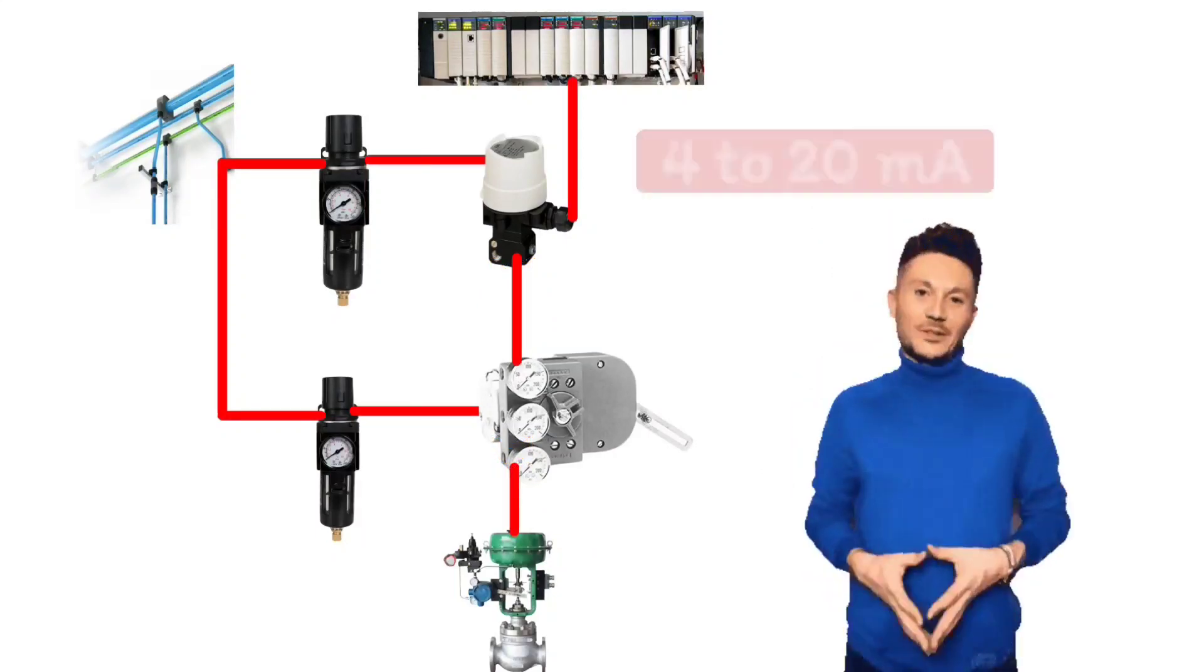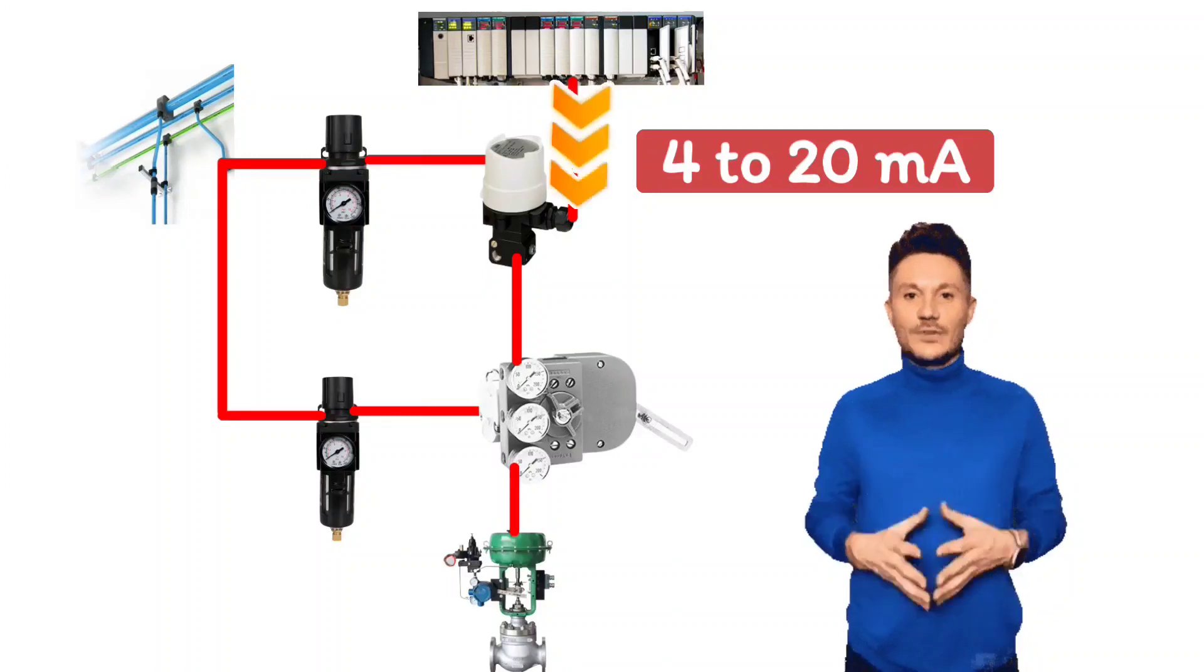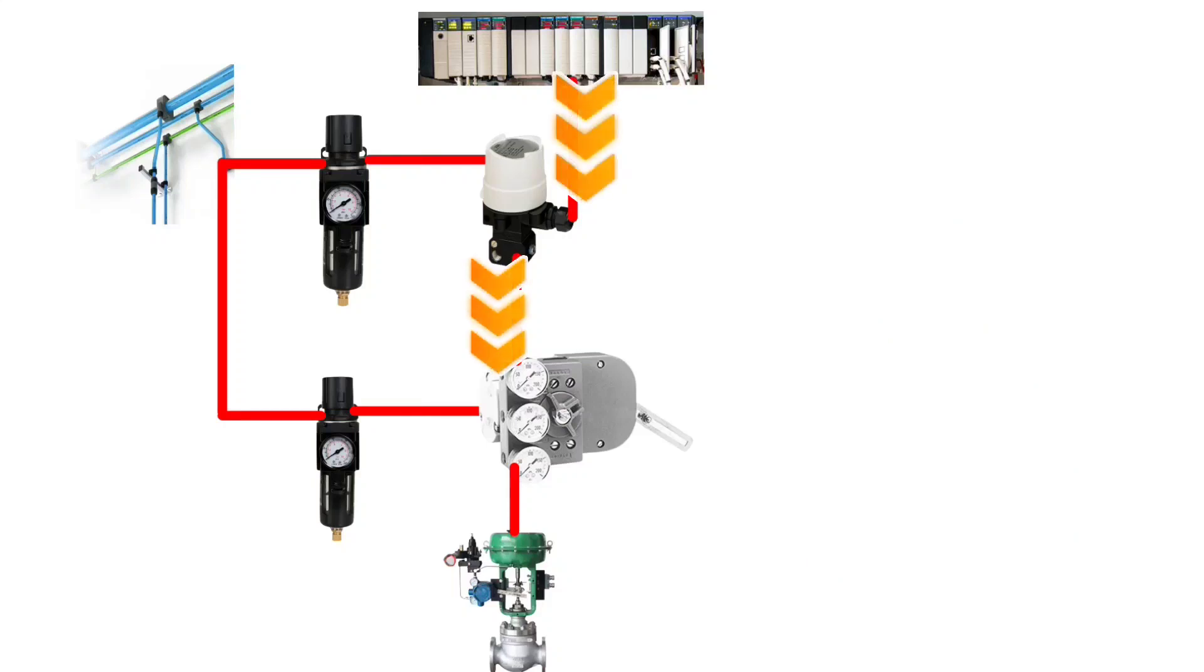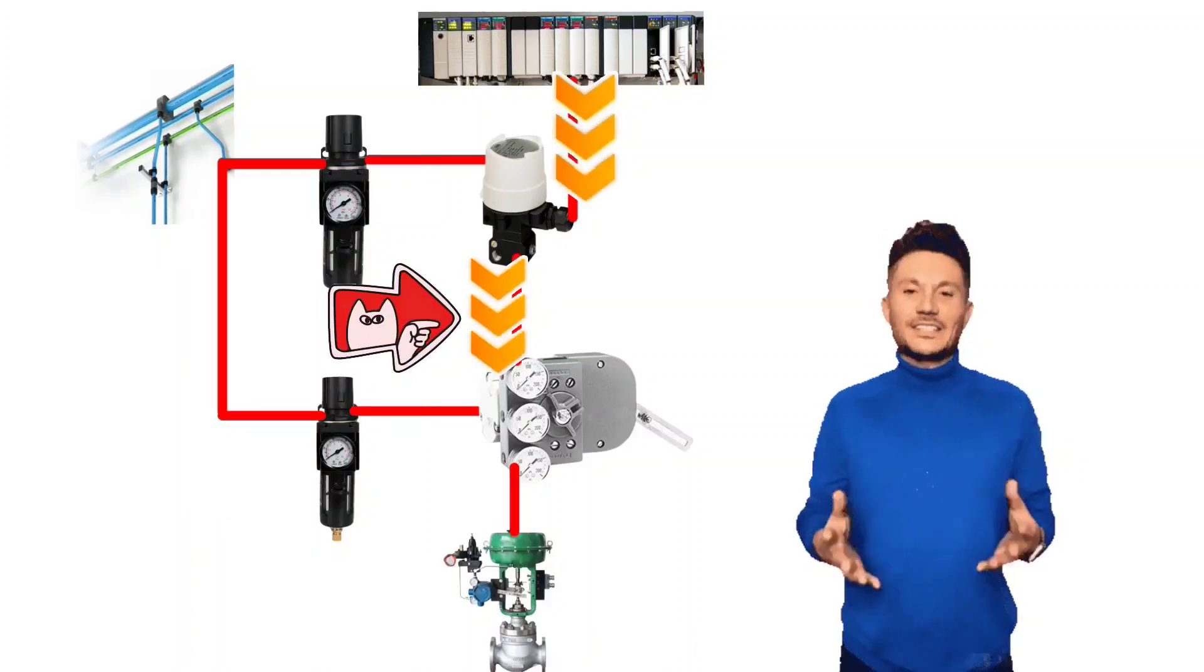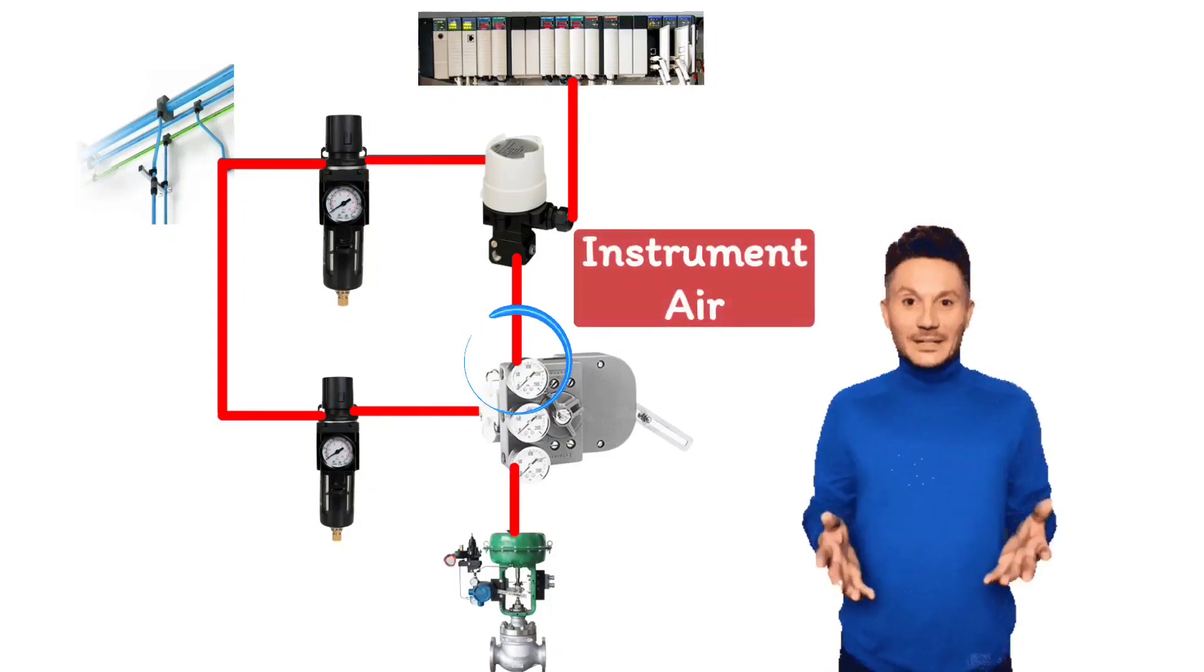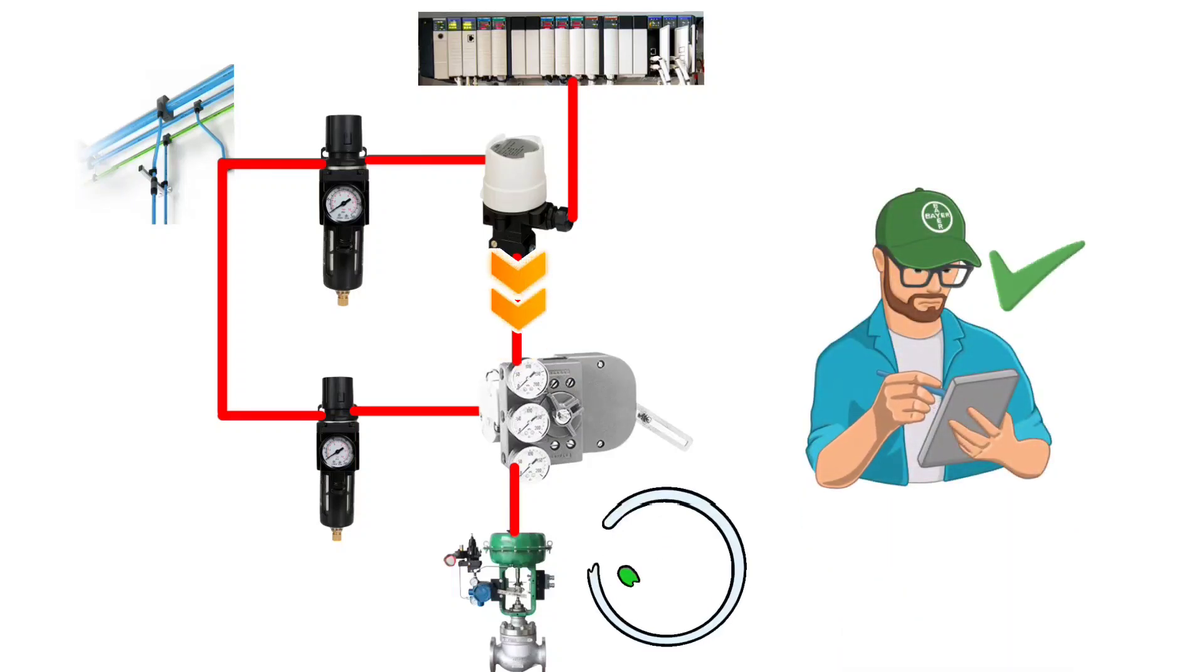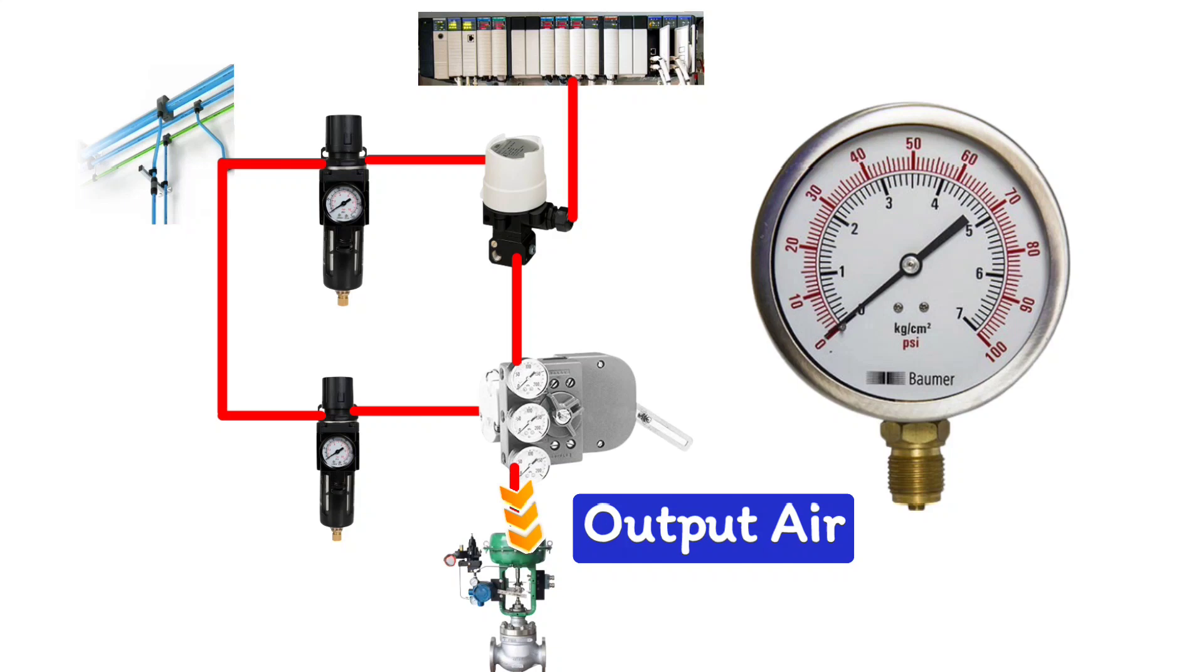4 to 20 mA signal will be given to I2P converter or valve positioner. As soon as 4 to 20 mA signal will be given to I2P converter, I2P converter according to this signal gives air signal to the pneumatic positioner which is given on the instrument air port of the pneumatic positioner. According to this signal coming from I2P converter, pneumatic positioner operates the control valve. Friends, the pneumatic positioner has a pressure gauge which shows the output air signal. This output air signal is given to the control valve.